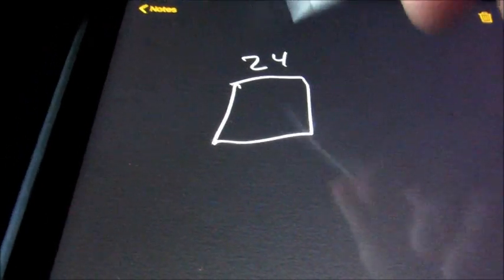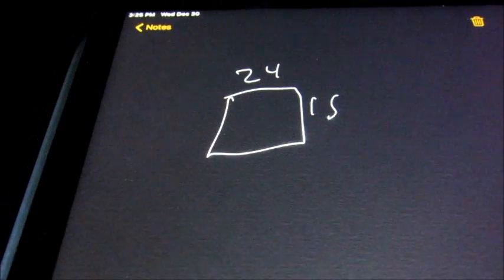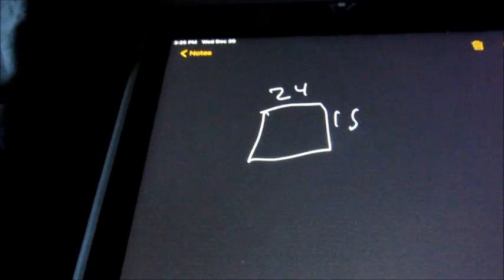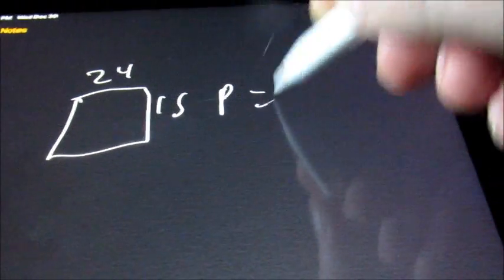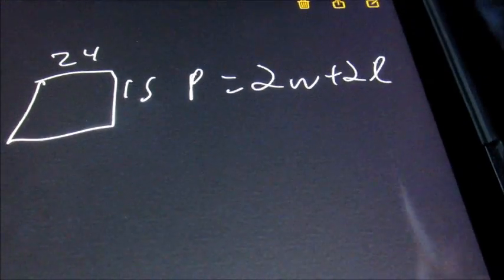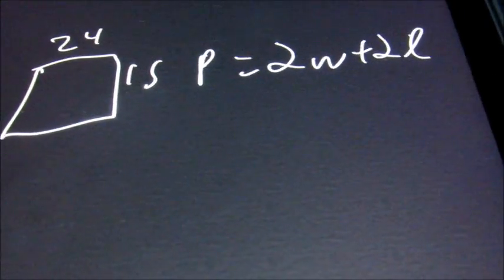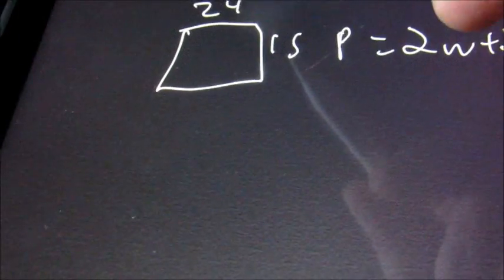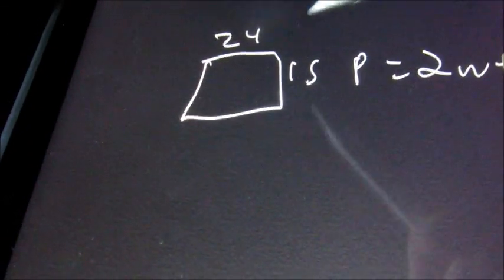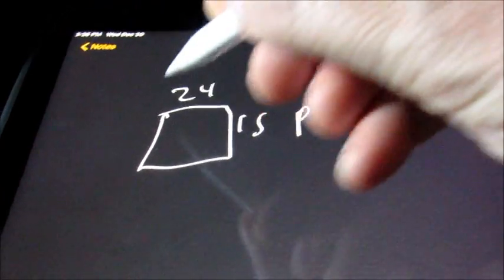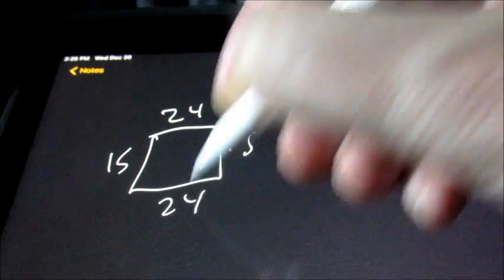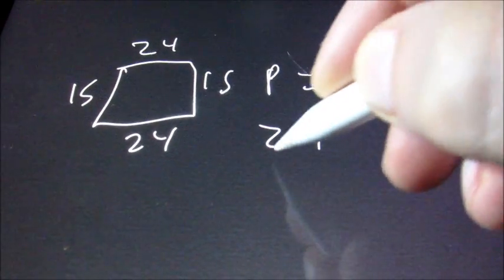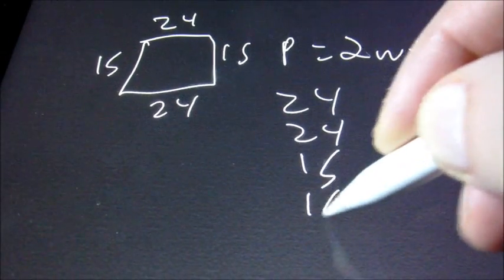Next, you're going to be asked to find the perimeter of a square or a rectangle. We have 24 and 15. The perimeter formula is P equals 2 times width plus 2 times length. What you can do is just put 15 here and 24 here, and add 24 plus 24 plus 15 plus 15.